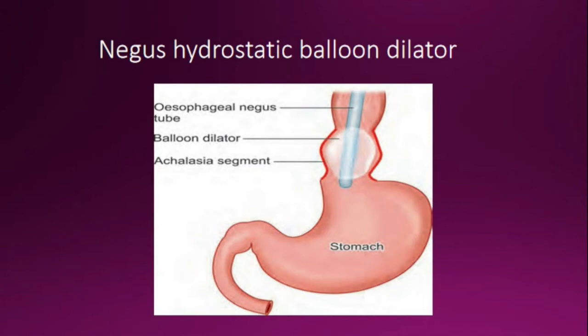For forcible dilatation: the Negus hydrostatic balloon dilator and Plummer's pneumatic dilatation can be used. In pneumatic dilatation, muscle fibers are stretched by forceful inflation of a balloon placed inside the lower esophageal sphincter. You can see the picture — a balloon is inserted.